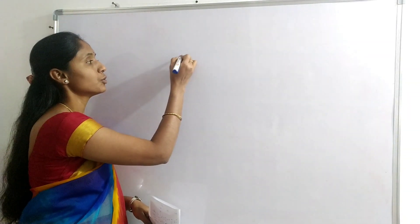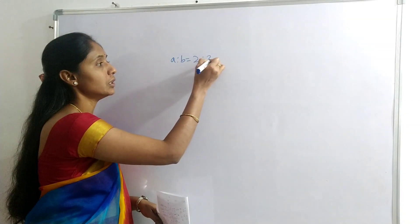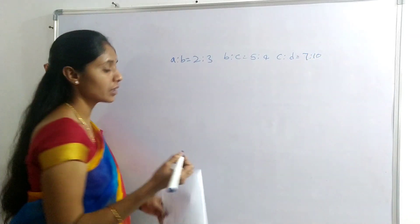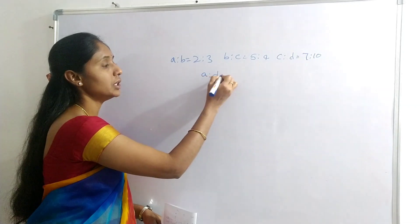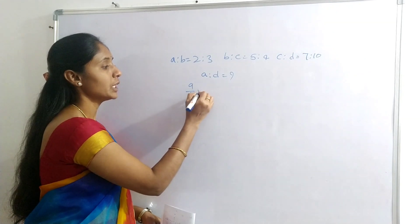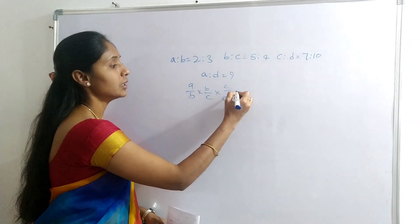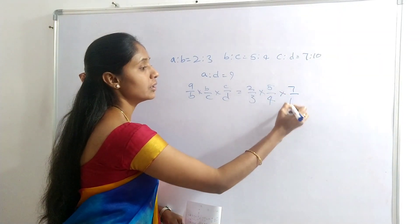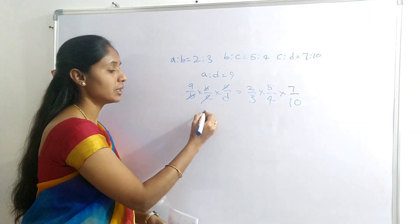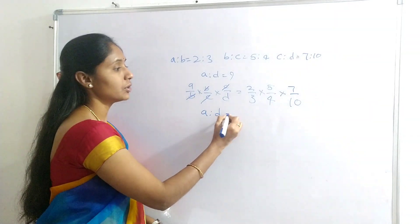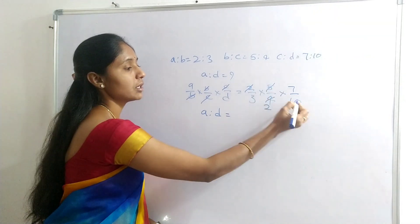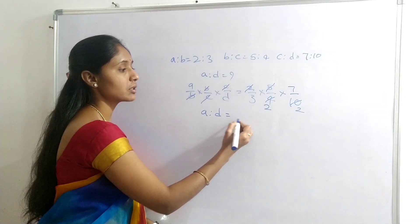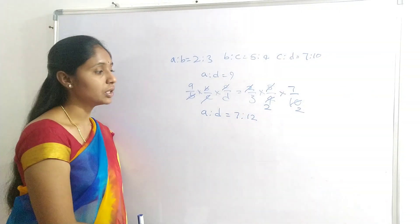Next question: A:B = 2:3, B:C = 5:4, C:D = 7:10. Find A:D. We write (A/B) × (B/C) × (C/D) = (2/3) × (5/4) × (7/10). B and B cancel, C and C cancel, leaving A/D. Simplifying: 2×5×7 = 70, 3×4×10 = 120, which gives 7/12. So A:D = 7:12.